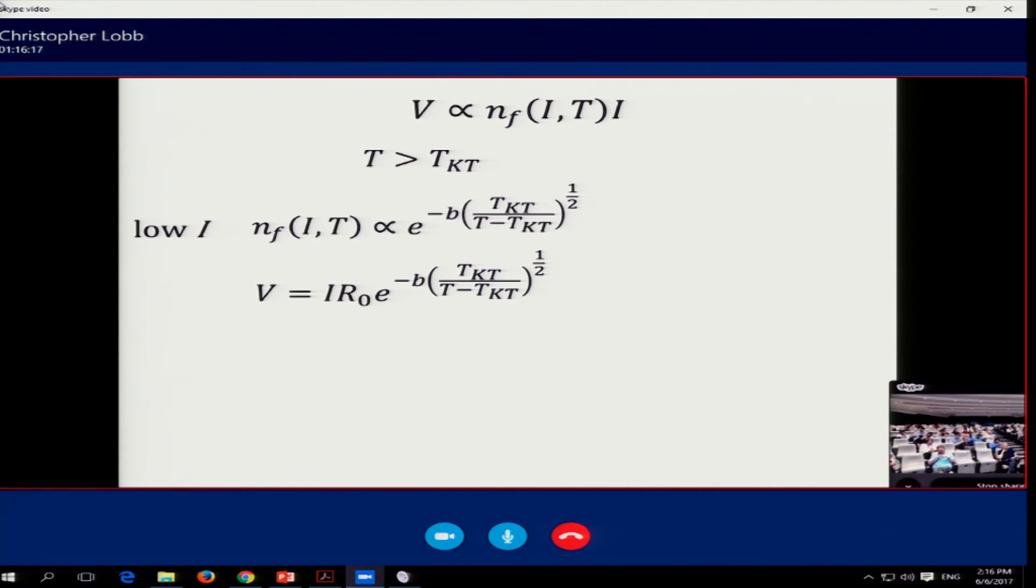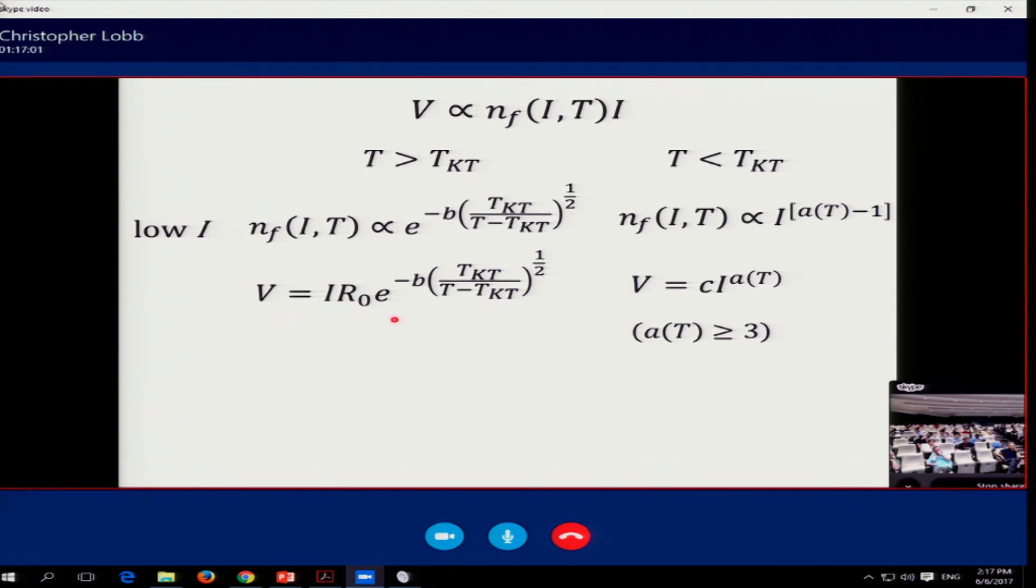So at first sight, this looks great. And we can do a similar thing for just below TKT. Here there are no free vortices unless we apply a current. But the generation of them, as shown in the work of a number of people, I particularly like Nelson and Halperin's paper on this, is a power in I, some A of T minus one, because we want to reserve the A of T for the voltage. The voltage introduces another power of I, and the prediction was that V goes as CI to the A of T, where A of T is greater than or equal to three. So we get power law dependence like that below the Kosterlitz-Thouless temperature, and ohmic dependence like that above the Kosterlitz-Thouless temperature.